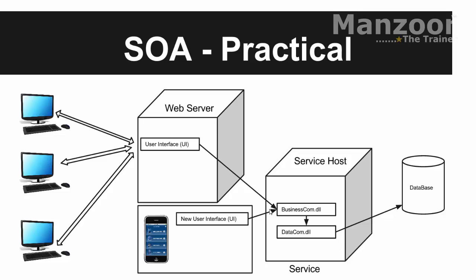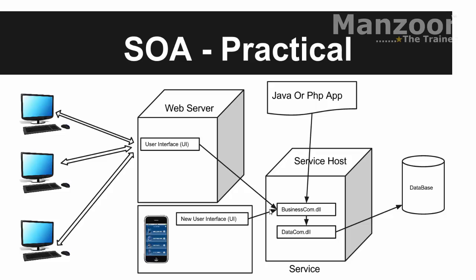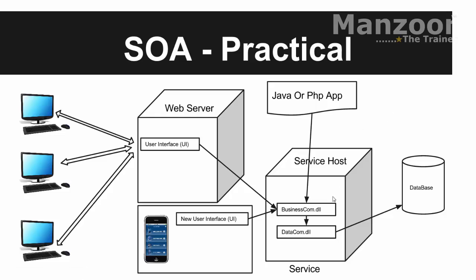The advantage now is that my Java or PHP application can also interact with this business component. Part of my application is on one server and another part is on a separate server — we call this a distributed application, or service oriented architecture. Tomorrow if I want to develop a Windows app, I just use the same business component. This is your service oriented architecture.